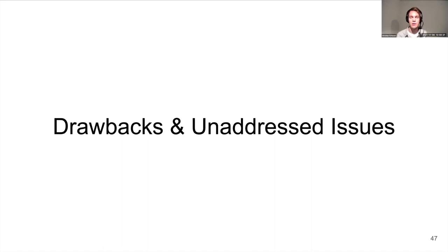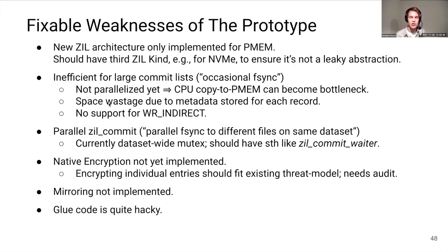We should discuss some drawbacks of zilpmem. The prototype has a bunch of weaknesses: we only have one implementation of this architecture, so we don't know whether the abstraction is leaky. There are problems with workloads that only do occasional fsyncs — we haven't looked at those in benchmarks, but there are inefficiencies in the implementation. There are also unaddressed performance issues with parallel fsyncs on the same file — we could improve this using commit waiters.